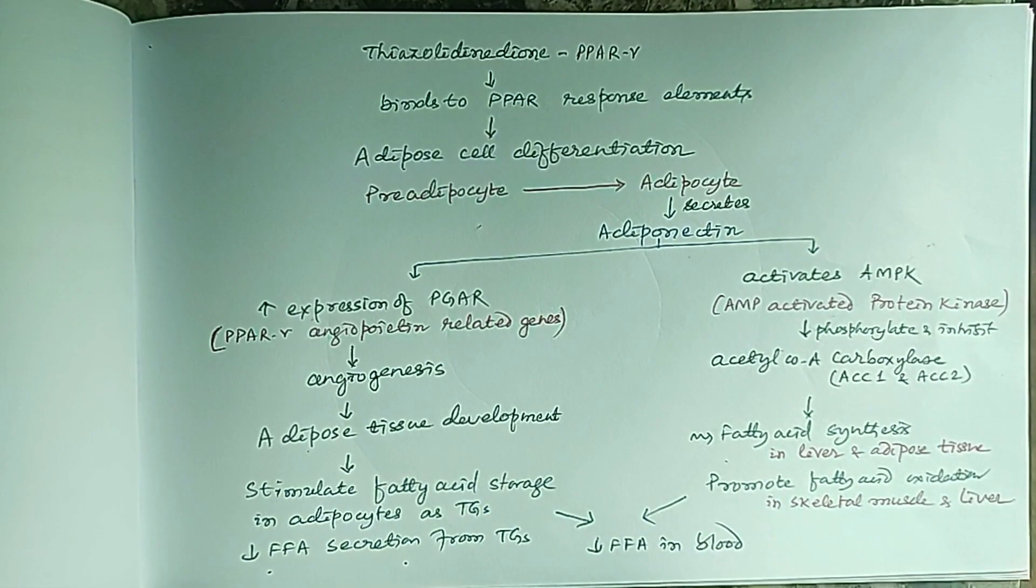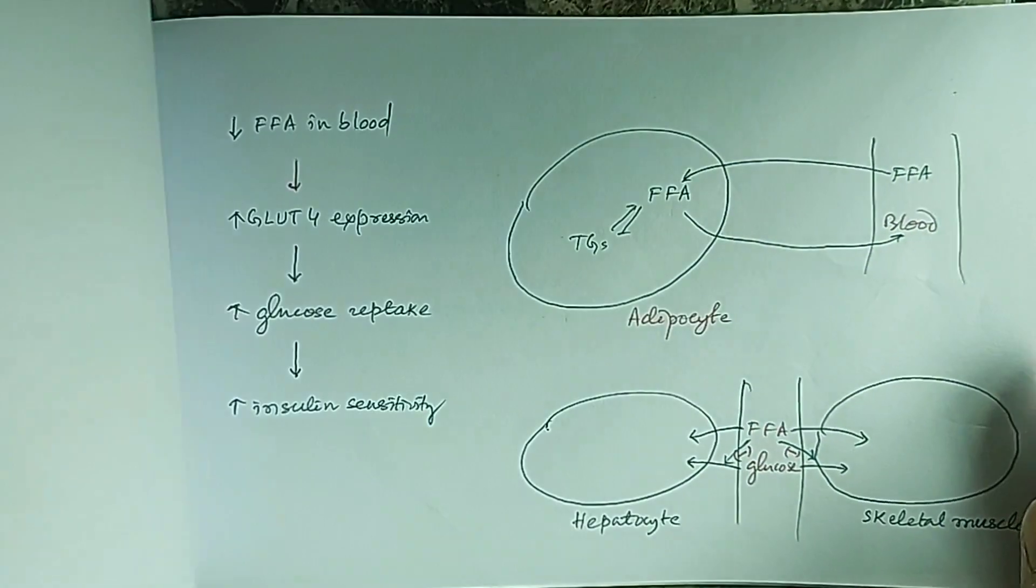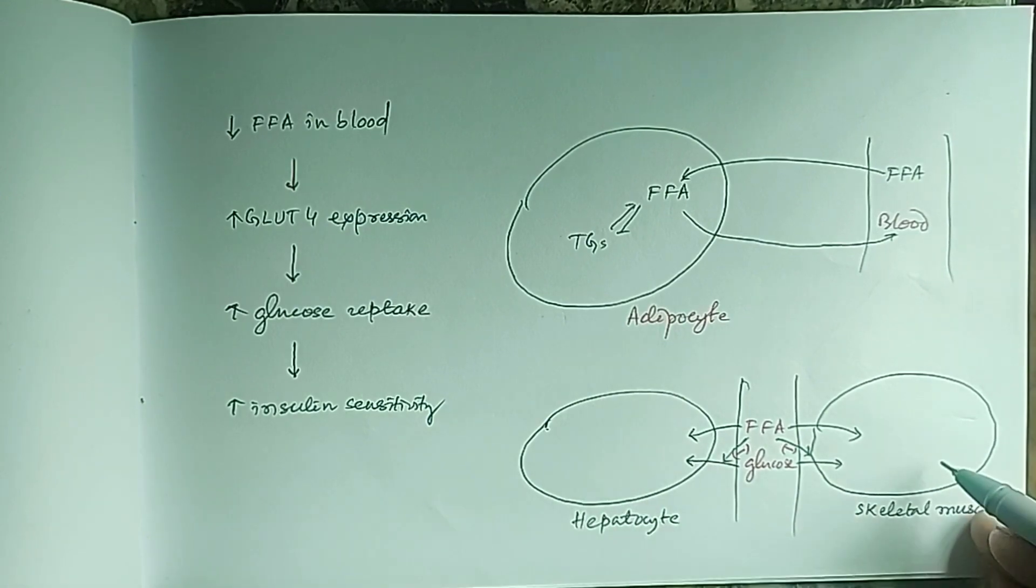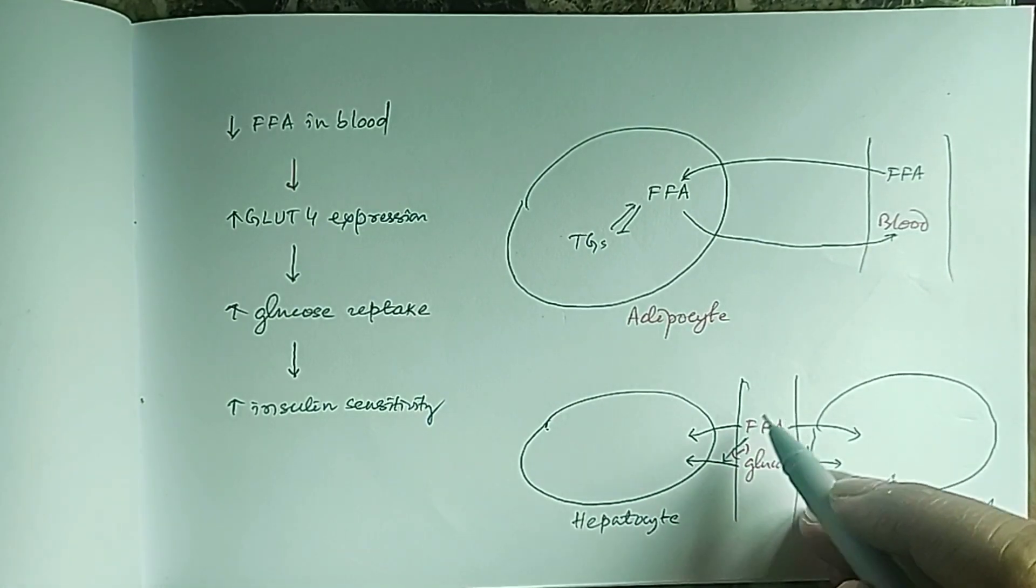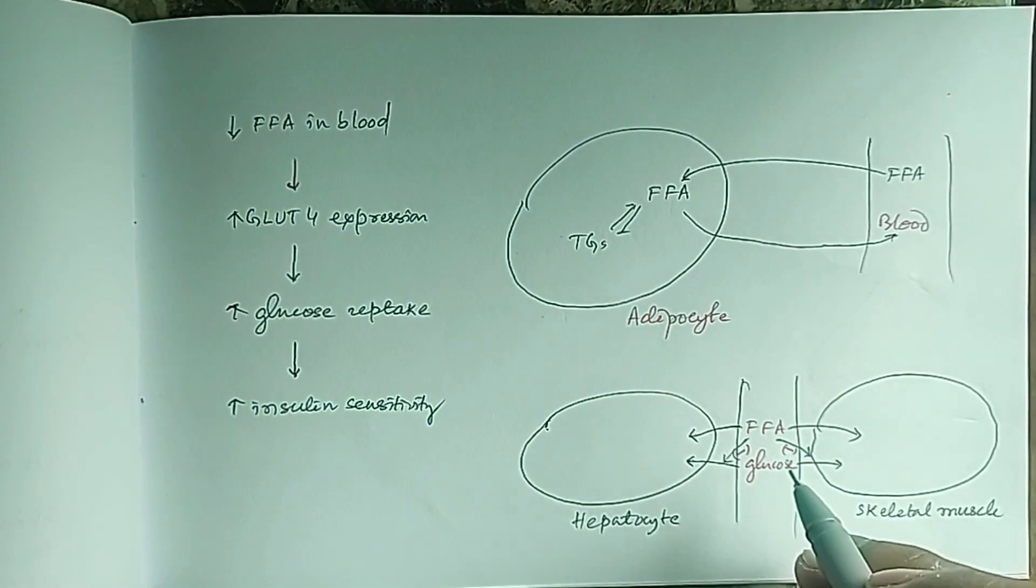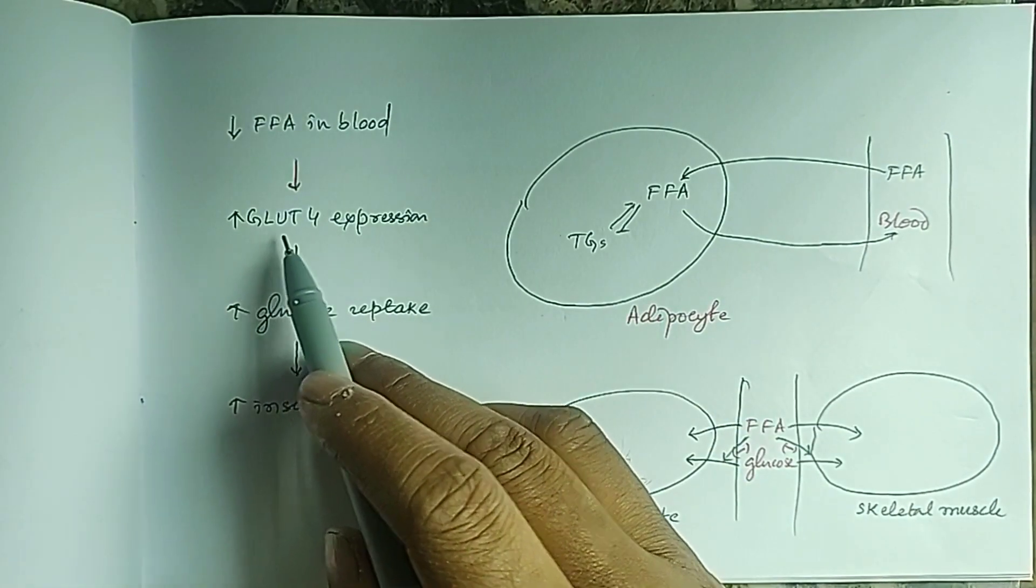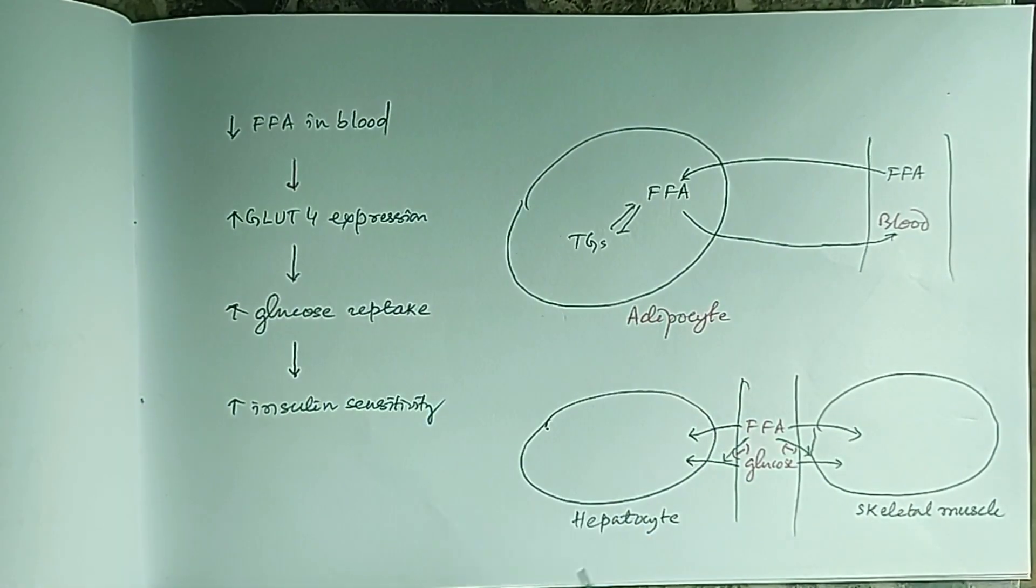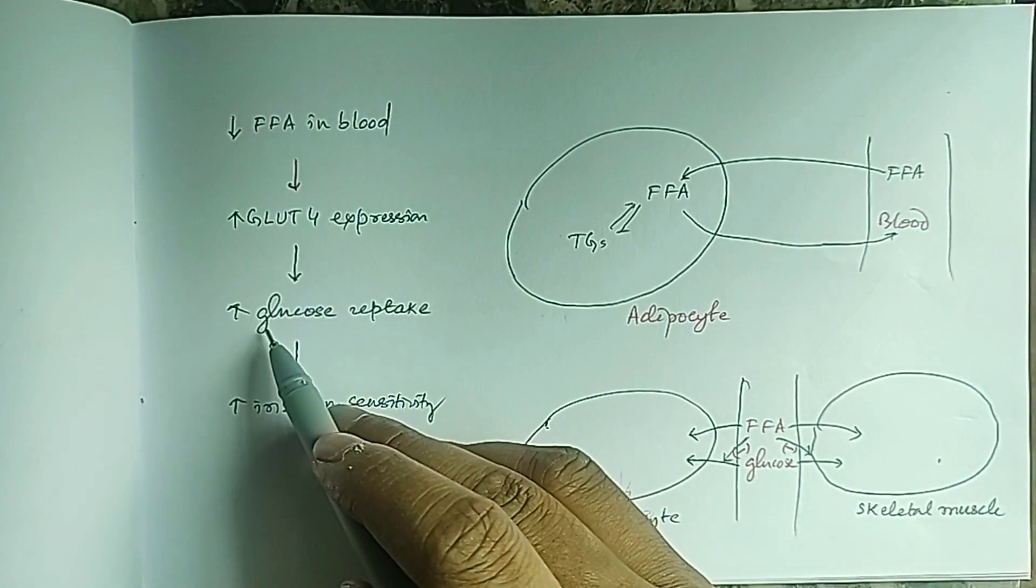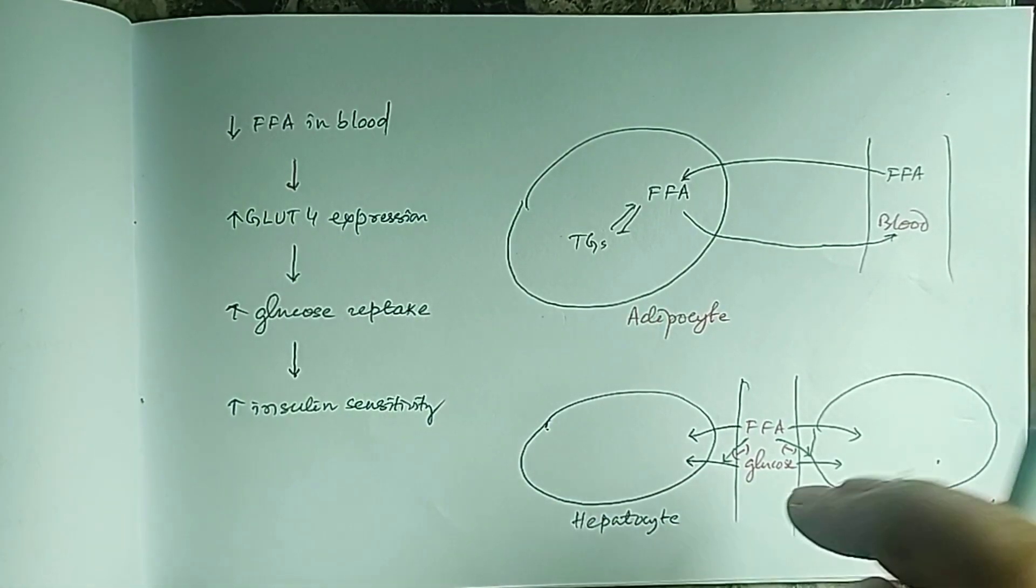All these actions result in decreased free fatty acid in blood. Free fatty acids compete with glucose for uptake into hepatocytes and skeletal muscles. When free fatty acid level is decreased by thiazolidinediones, there will be increased glucose transporter 4 expression in hepatocytes and skeletal muscle fibers, and increased glucose uptake. So insulin sensitivity increases.